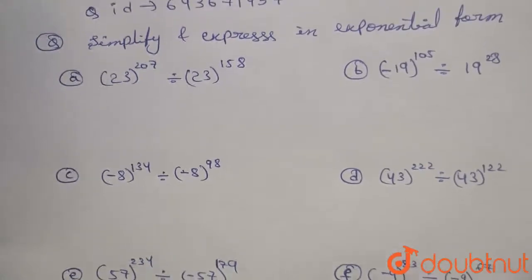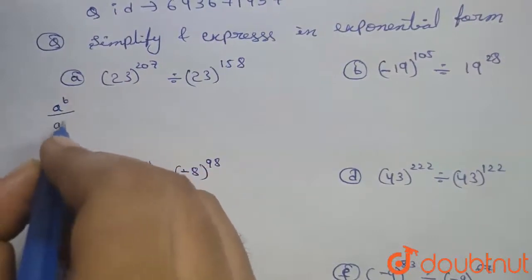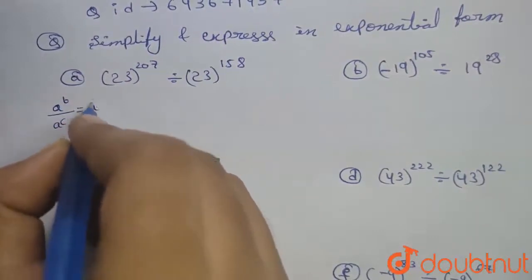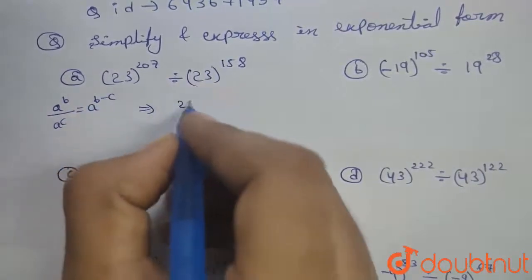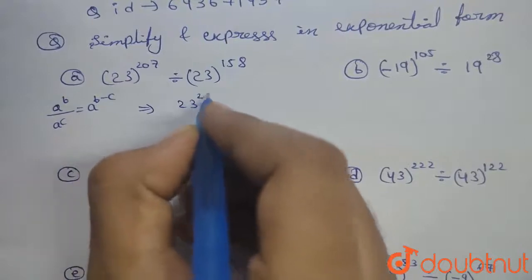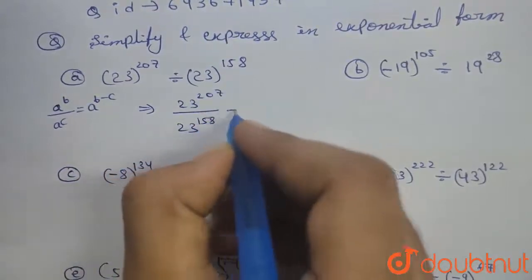Here we are using the identity A power B divided by A power C is equal to A power B minus C. Which can be written as solution is 23 power 207 divided by 23 power 158 which is equal to 23 power 207 minus 158 will be 49.